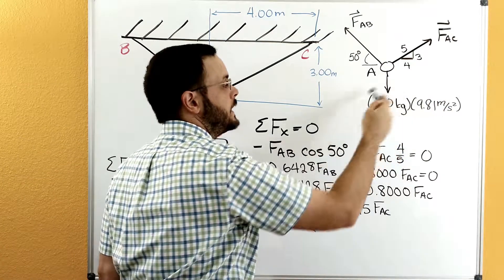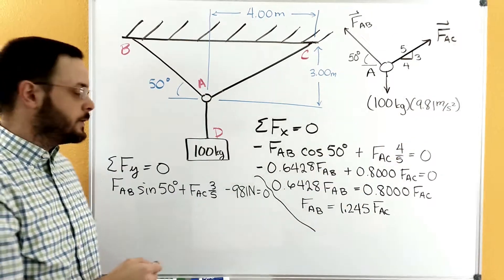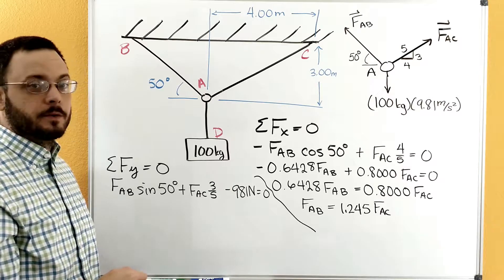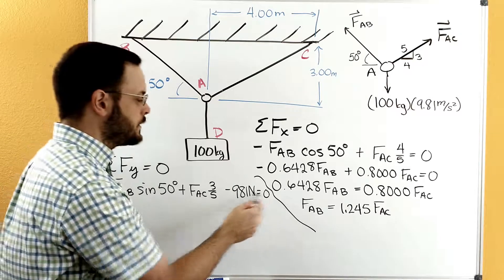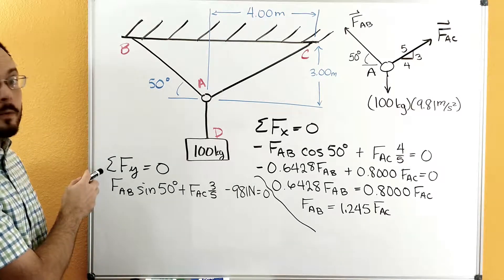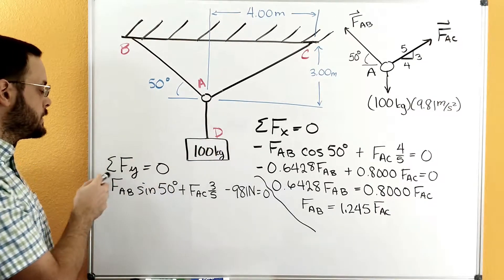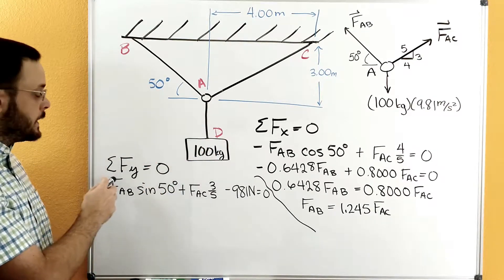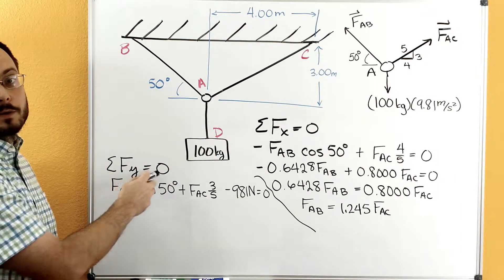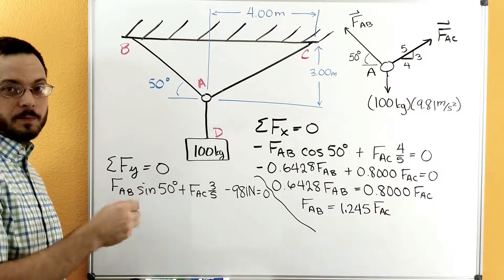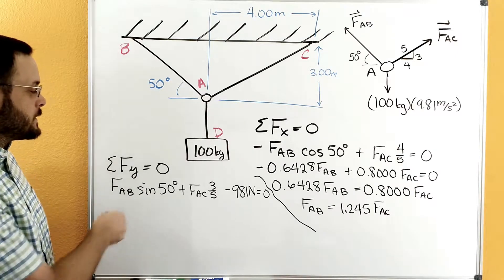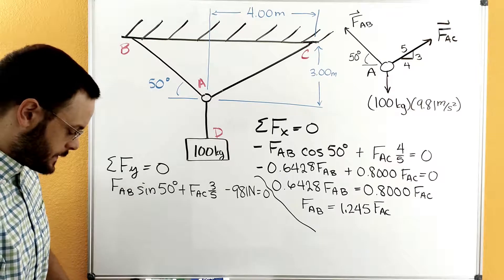which is going to be the 3 side divided by the hypotenuse, which is the 5 side. Then down here, we have a negative 981 Newtons. So we do minus 981. And that's all equal to 0. And again, when you're writing either one of these two equations, make sure that you write the sum of forces, give the direction, and say that it's equal to 0. It helps people follow your work. Now let's finish up with the algebra here and get a solution.